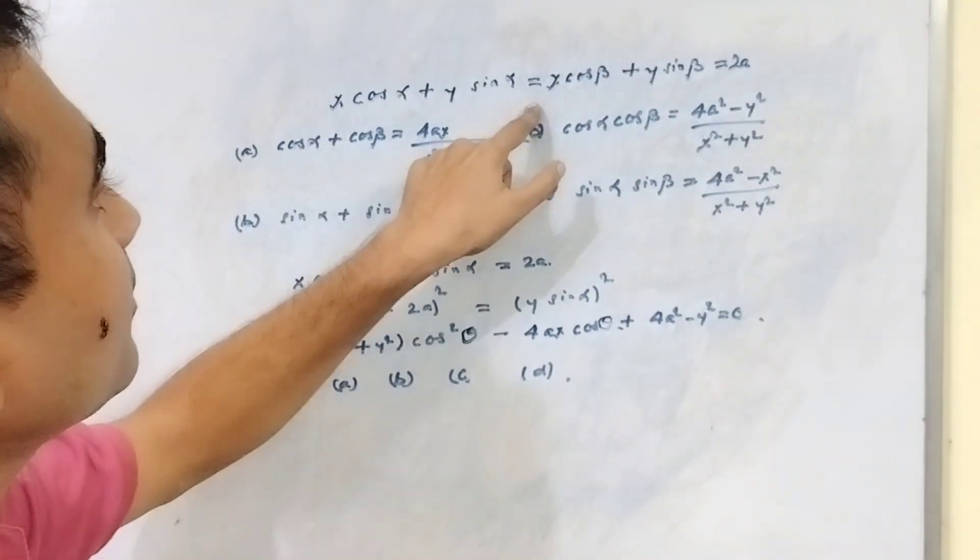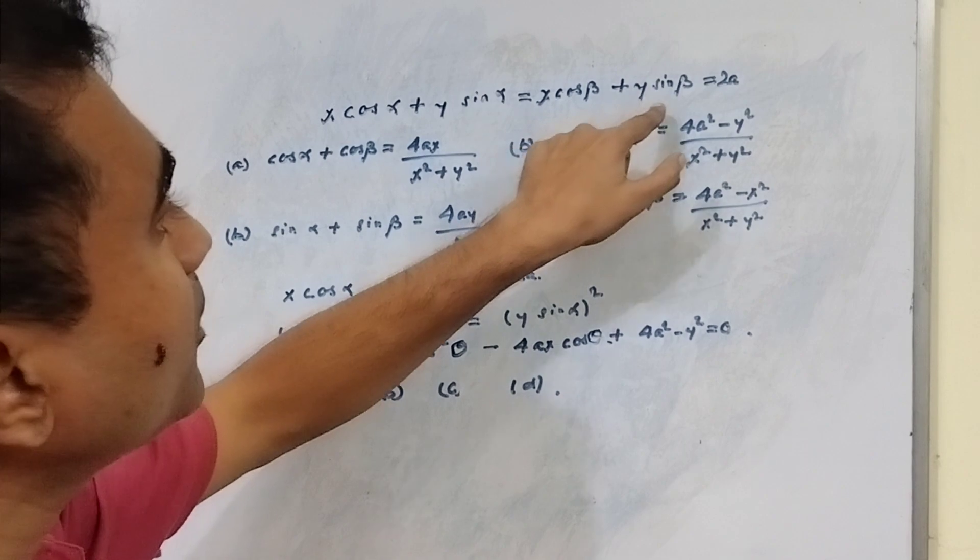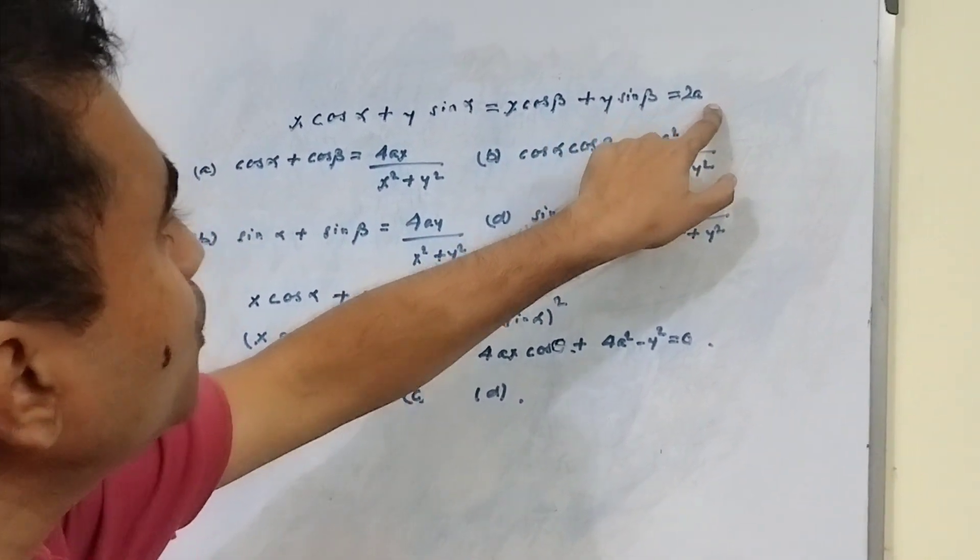x cos alpha plus y sin alpha is equal to x cos beta plus y sin beta is equal to 2a.